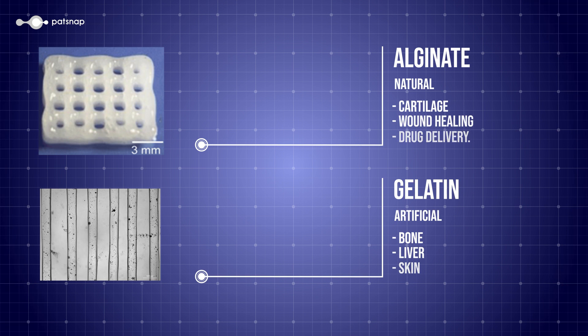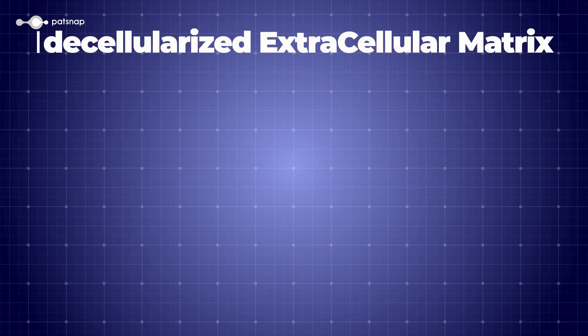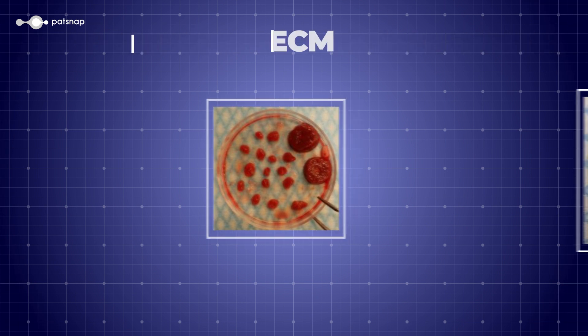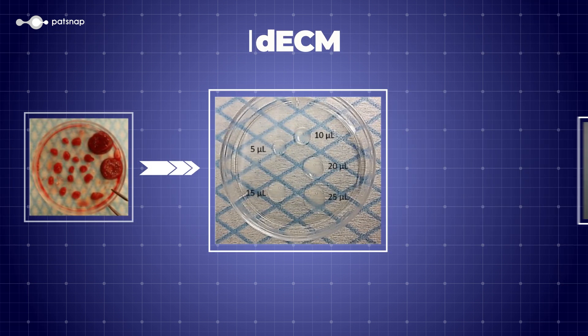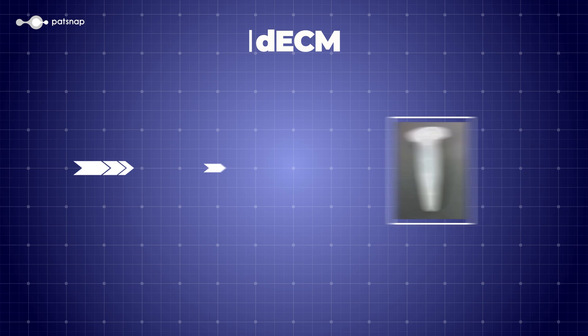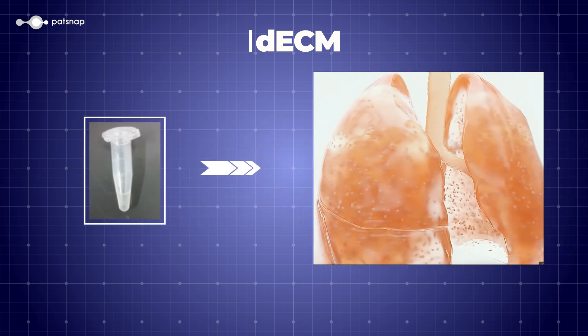Finally, there's DECM, or Decellularised Extracellular Matrix. DECM uses existing material in human or animal tissue, but undergoes a process to remove all the cells, only leaving behind the natural scaffolding material. This material contains all the biochemical cues and intricate microarchitecture inherent to the original tissue, effectively serving as a cellular guide, directing cellular growth and behaviour.